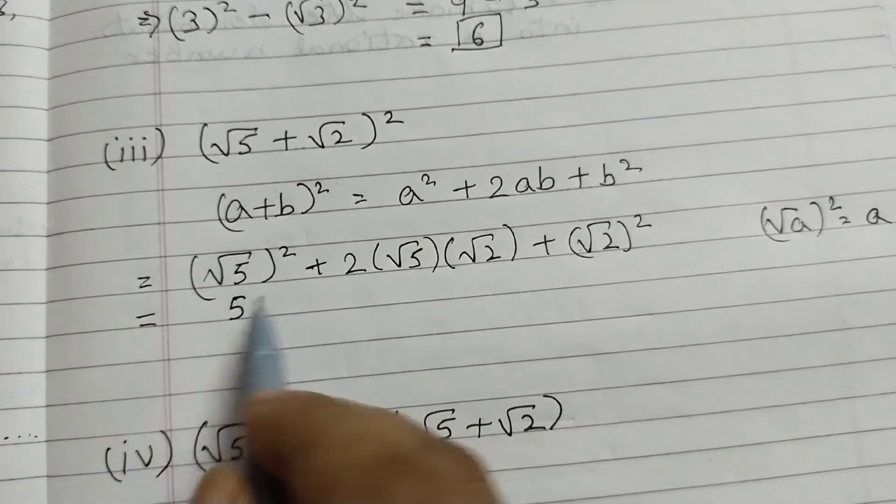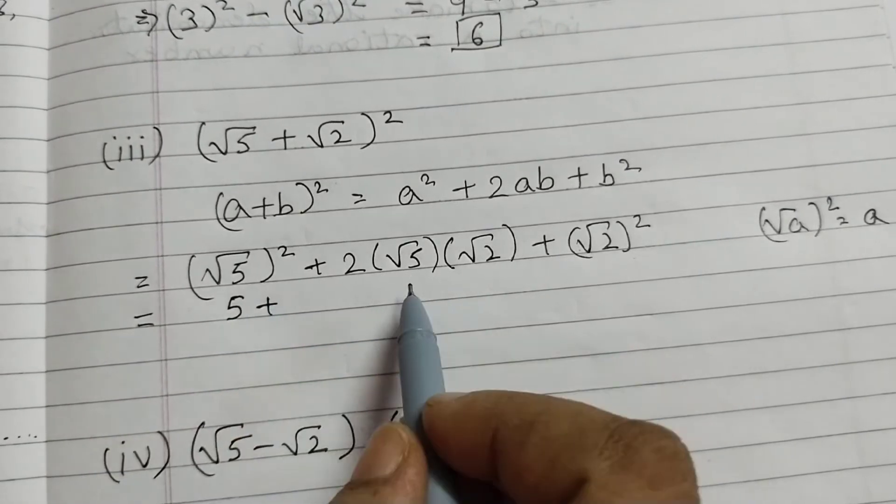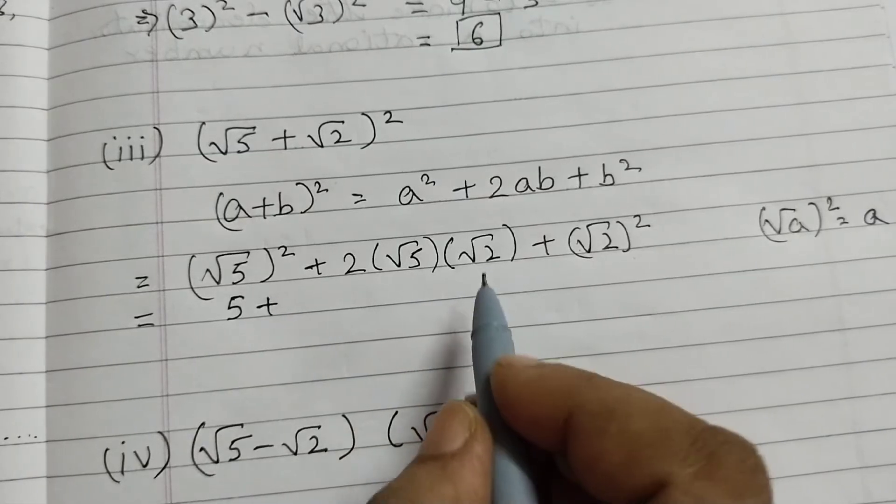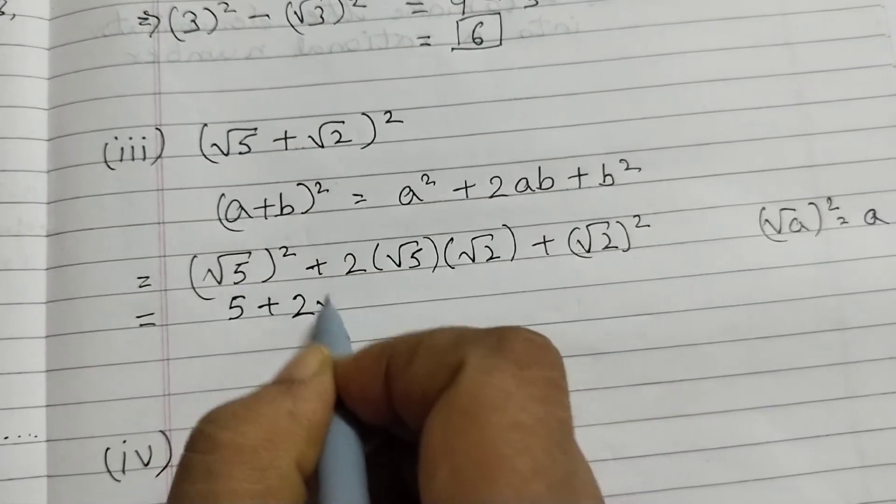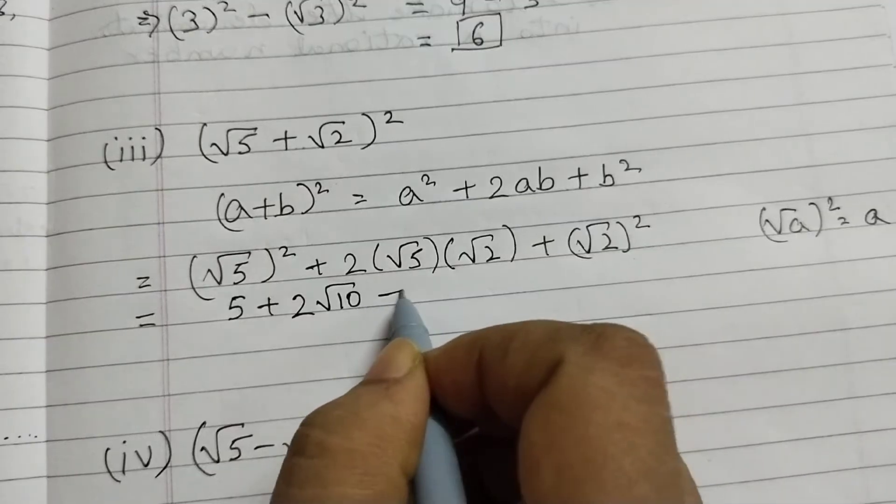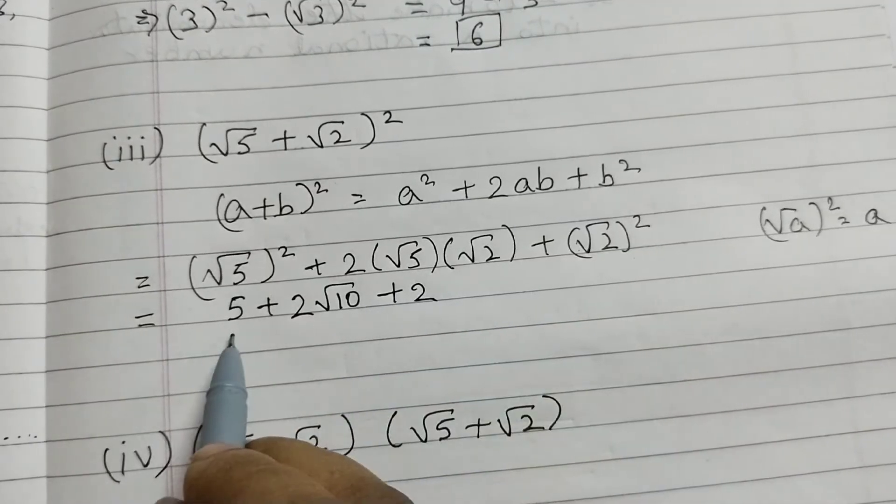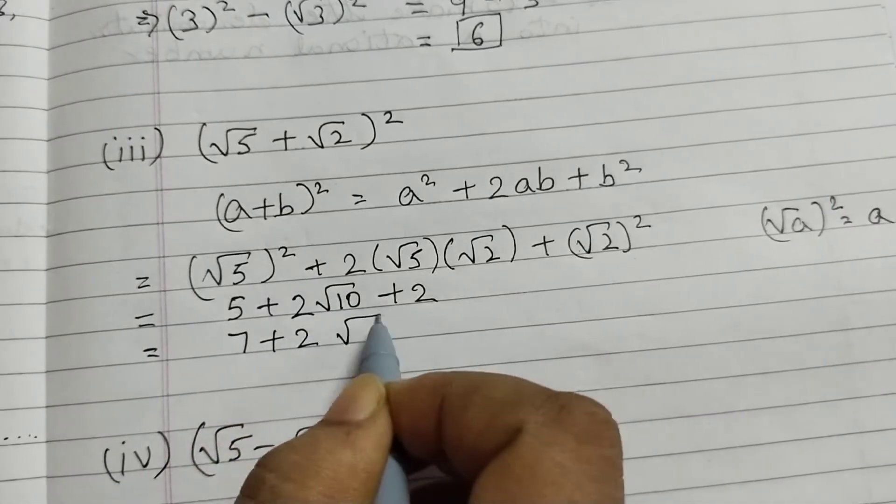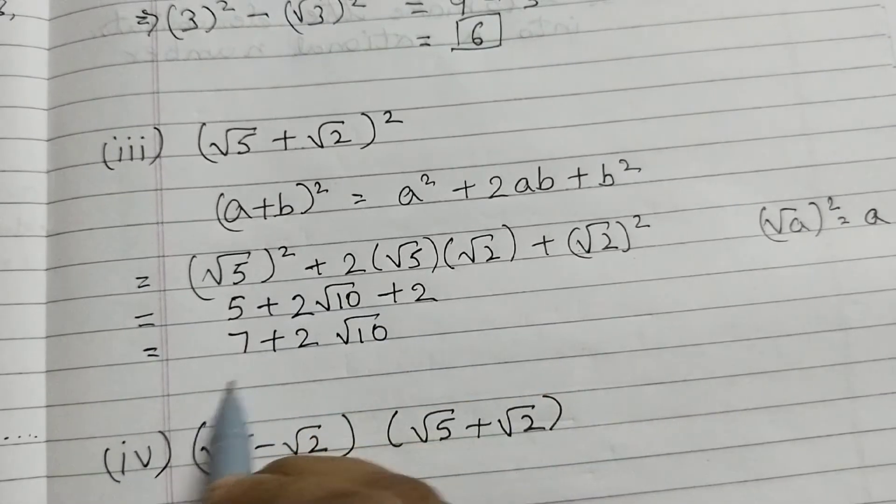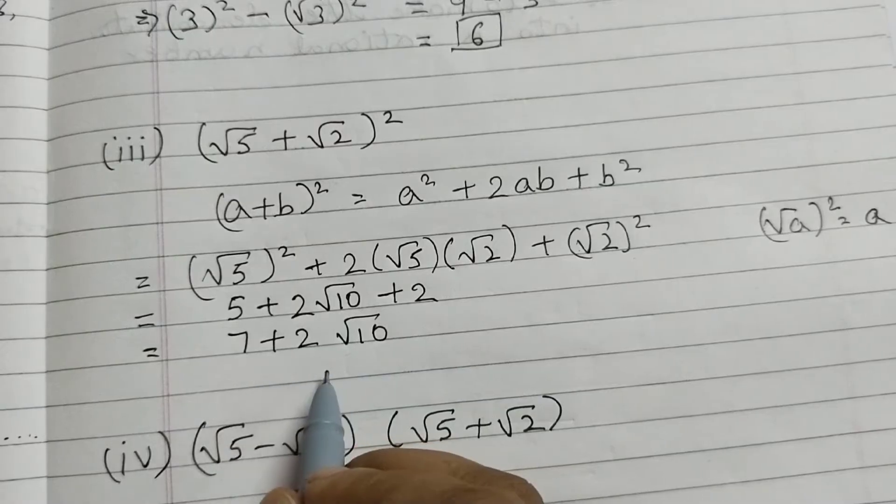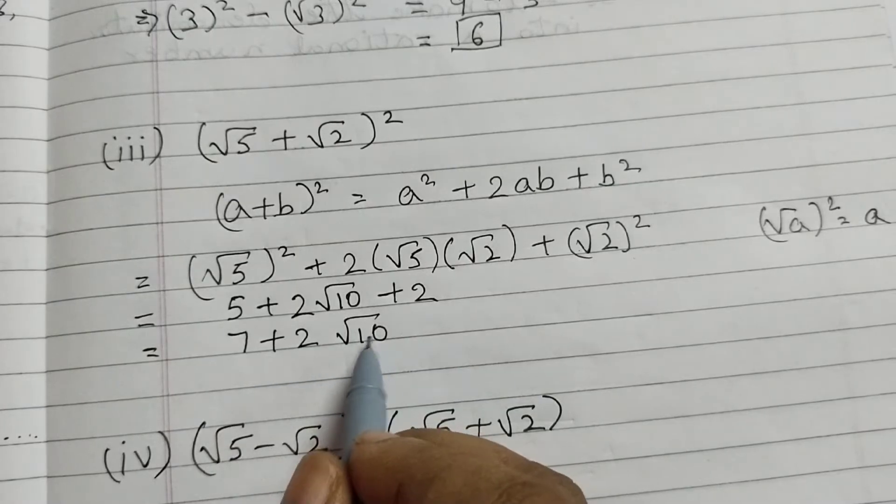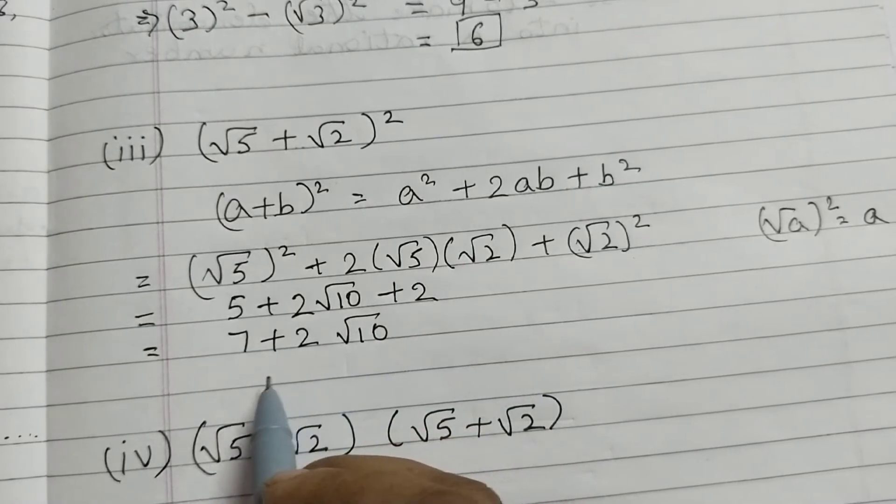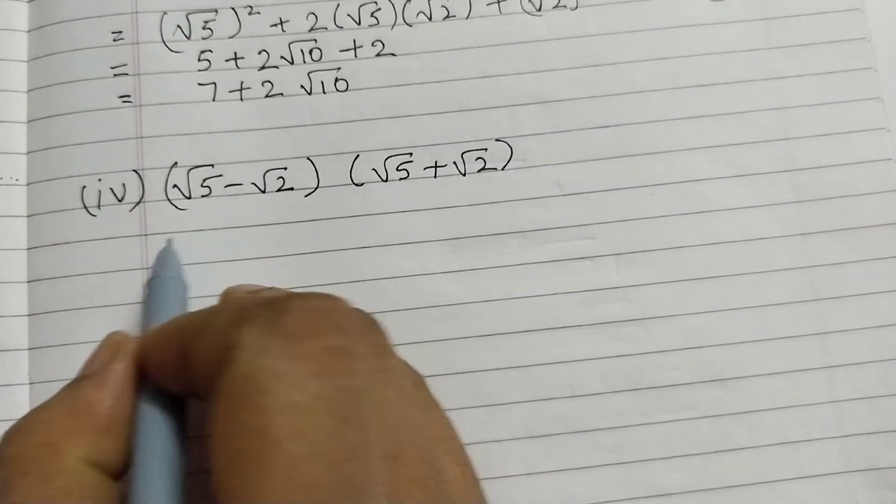Root 5, root 5 squared is 5 plus root 5 into root 2 is root 10. So that's 2 root 10 plus 2, 5 plus 2, 7, 7 plus 2 root 10. Now this is in simplest form. We cannot add these two because here we have root 10, so we cannot add this. This is the answer.